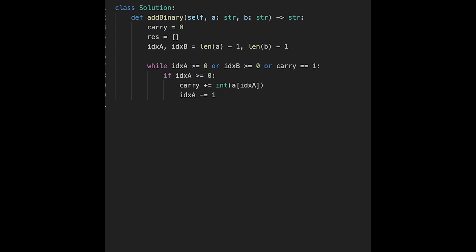And the same reason for b index. So if index b is greater than or equal 0, we calculate from b. So carry plus equals, convert to integer from string. So in this case, b and index b. And then we move index b to next, so minus equals 1.